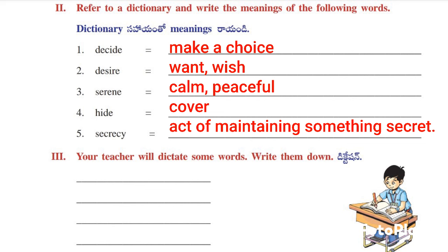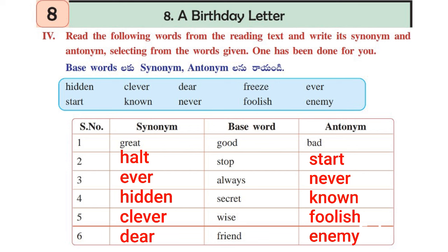Next we have the dictation words. Your teacher will dictate you some words and you have to write it down carefully. This is a student activity. You have to write it down by yourself. Let's move on to roman number four. In this roman, we have given some words which are base words. For that base word, we have to write down its actual meaning and its opposite word. One is given for us: Good — meaning is Great — opposite is Bad. Next: Stop — meaning is Halt — opposite is Start.